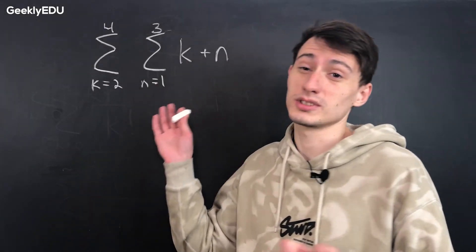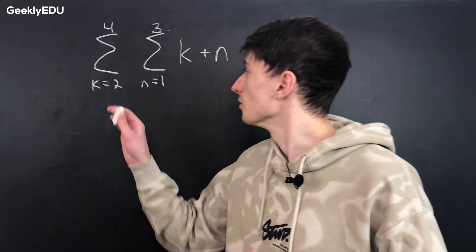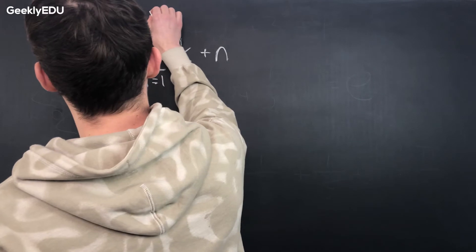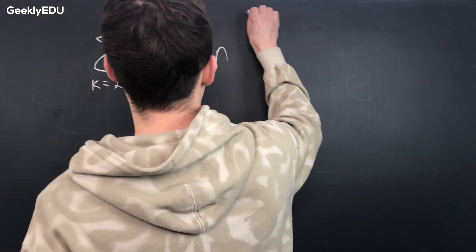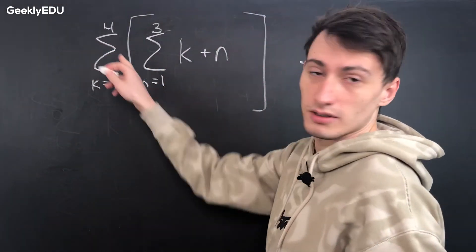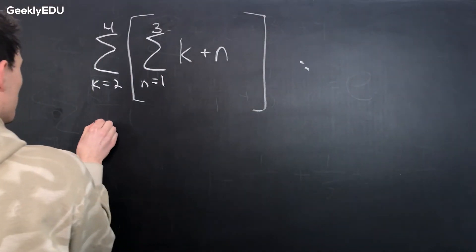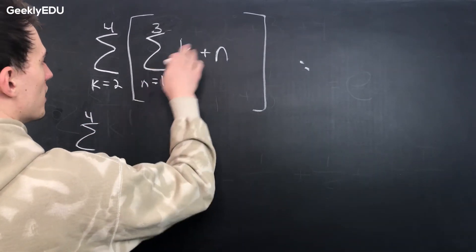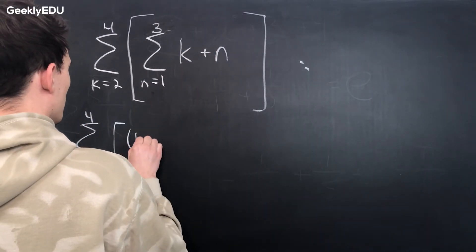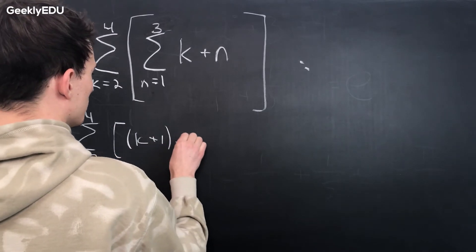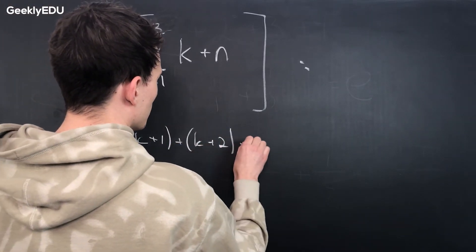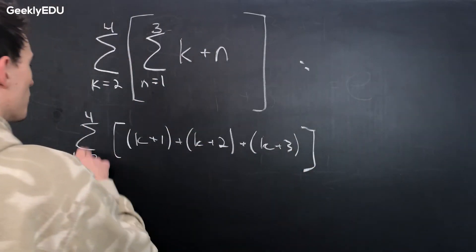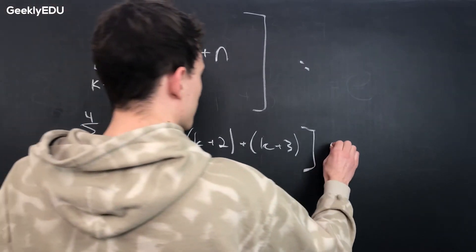Now what about double sums? They can be twice as confusing. The first thing we have to do when we have a double sum is isolate the right-hand side by drawing brackets around the inner sum. Then we just rewrite that inner sum using the first sigma. So we have the sum of k equals 2 to 4, and then we expand the inner sum in terms of n: k+1, plus k+2, plus k+3.